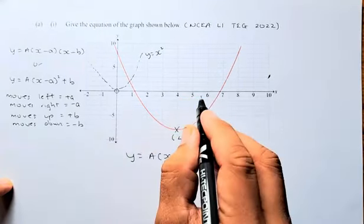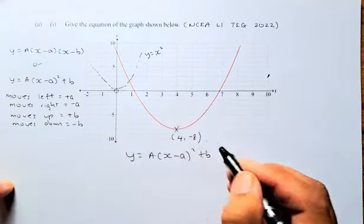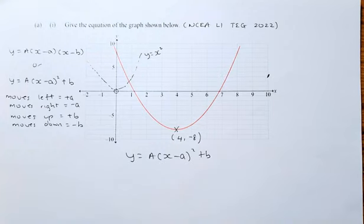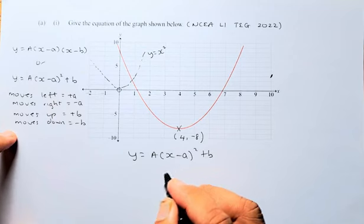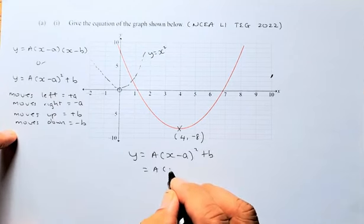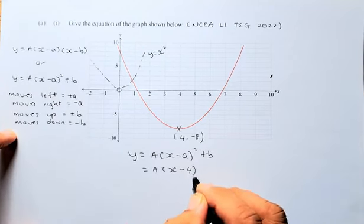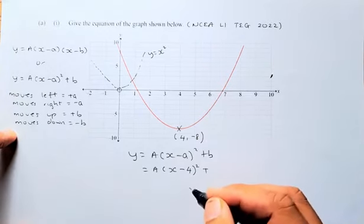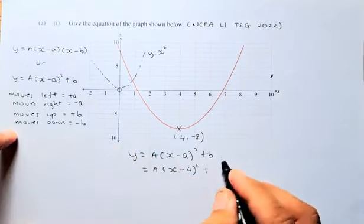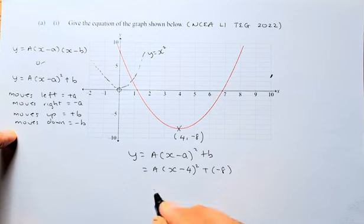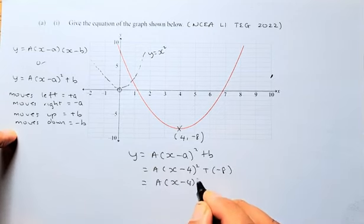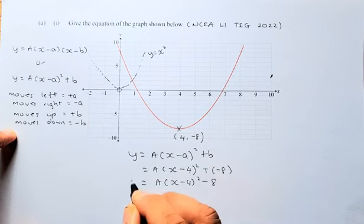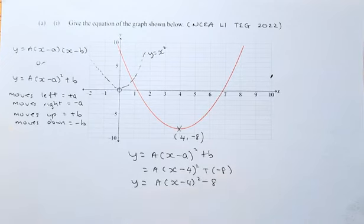So, it has moved 4 to the right and down 8. Now we know it has moved 4 to the right, so a has to be negative. It moved right is negative a. So, the equation is going to be a x minus 4 squared. And b has gone down 8, so it's going to be negative 8. The equation is a x minus 4 squared minus 8. That's the general equation of this graph.